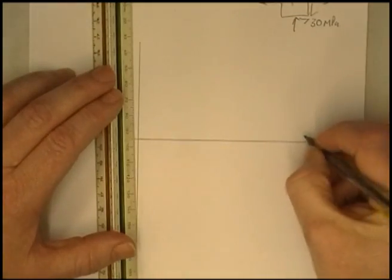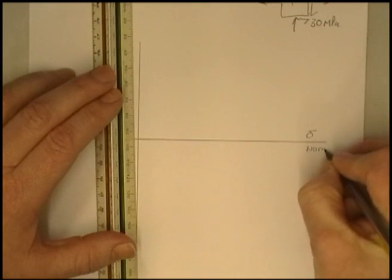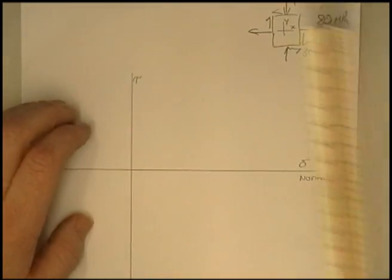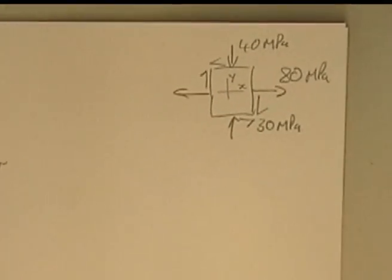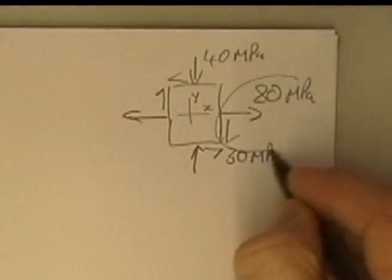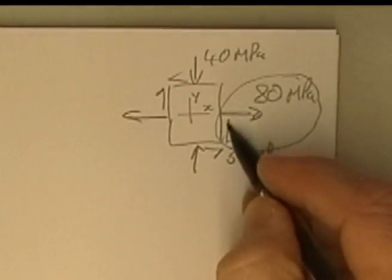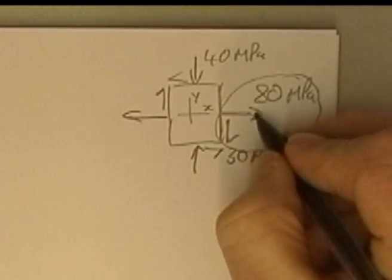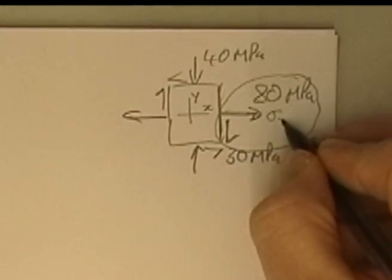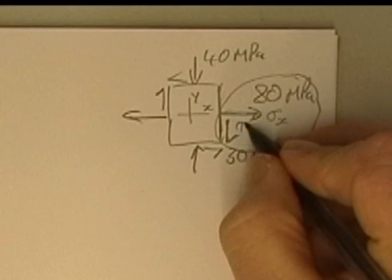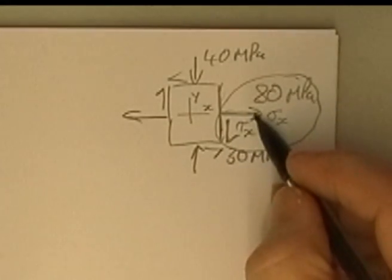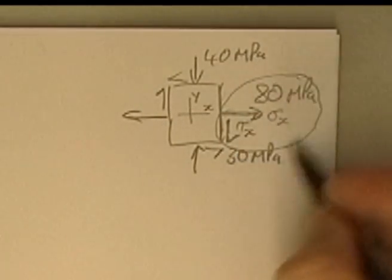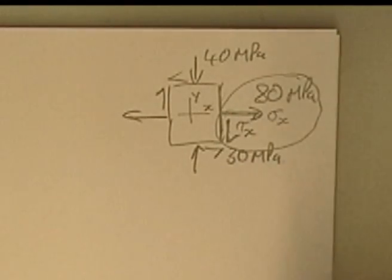This axis is my normal stress and this one up here is my shear stress. The first point is our x point. These two — this tensile stress and this shear stress — both act on that surface, so we call these the x values. This stress here is my tensile stress x, and this is my shear x, because the stress acts in the x direction and this shear acts on the same surface.